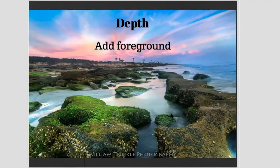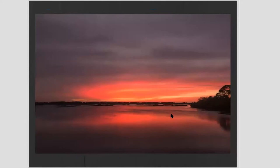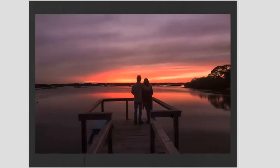Another thing we can do to improve photography is add depth. Think about a sunset photo: we have the foreground, the middle ground, and the background. When you add something to the foreground — which we don't think about as often — it really brings out the photo. Here's a sunset photo with great colors over the Gulf of Mexico. But if you put some foreground into it, see how much difference it makes. Foreground really changes that photo for the better.